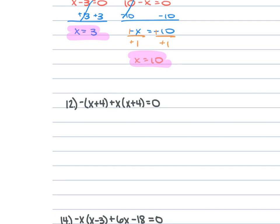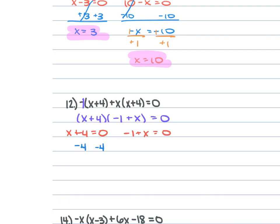For problem 12, we have −(x + 4) + x(x + 4) = 0. The negative is like −1·(x + 4), so this factors as (x + 4)(−1 + x) = 0. Setting each equal to 0: subtract 4 from each side gives x = −4. Adding 1 to each side on the other factor gives x = 1.